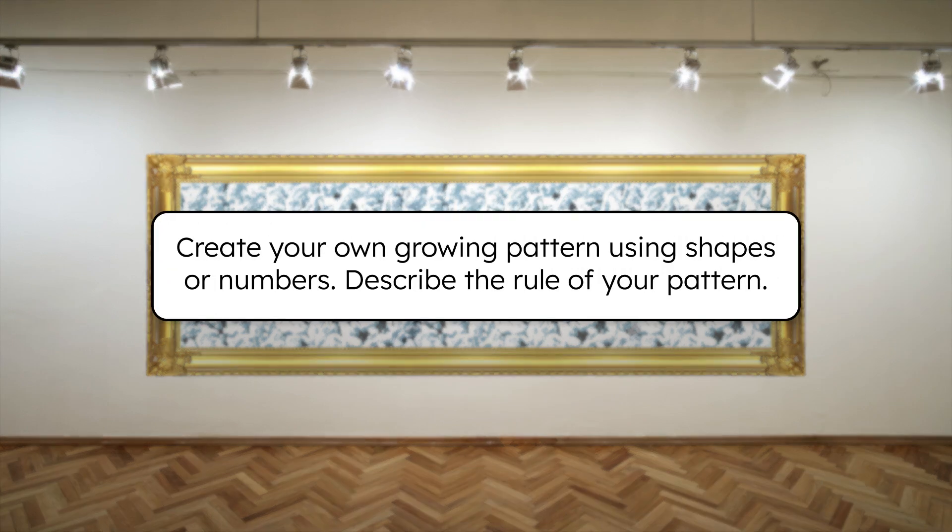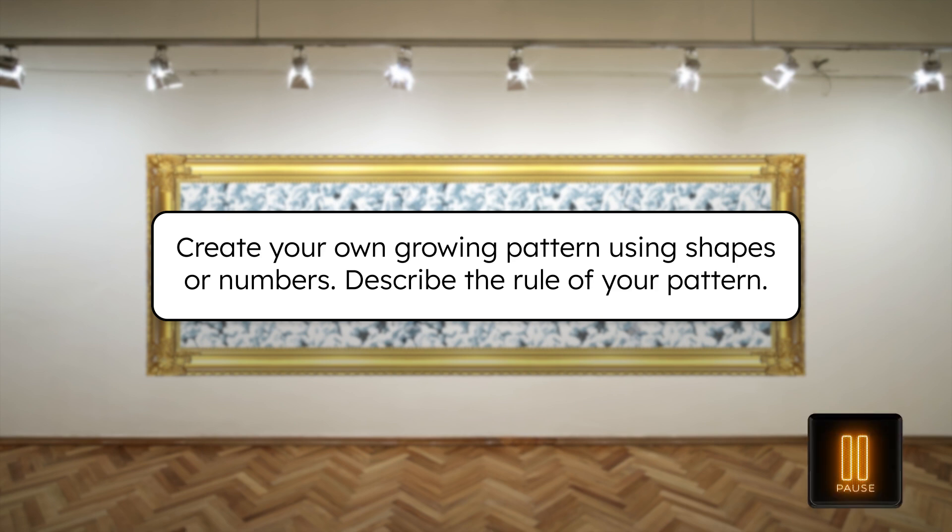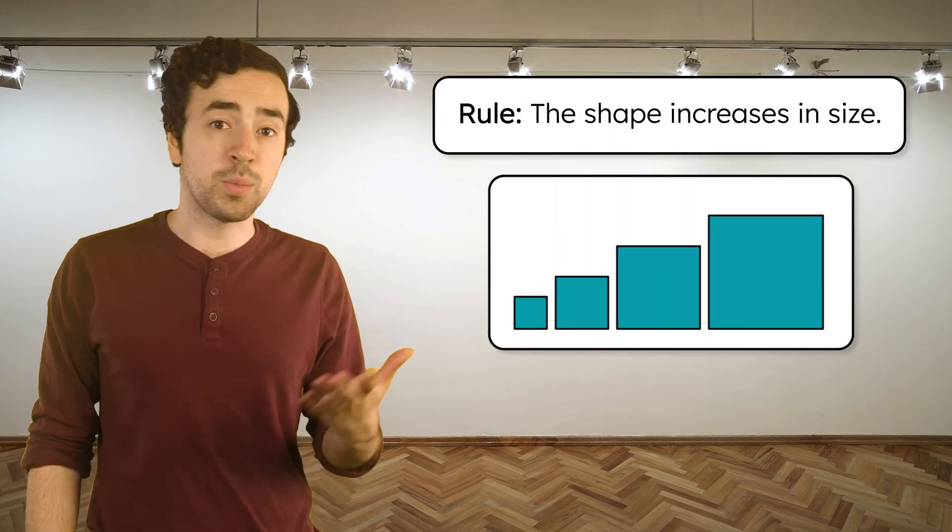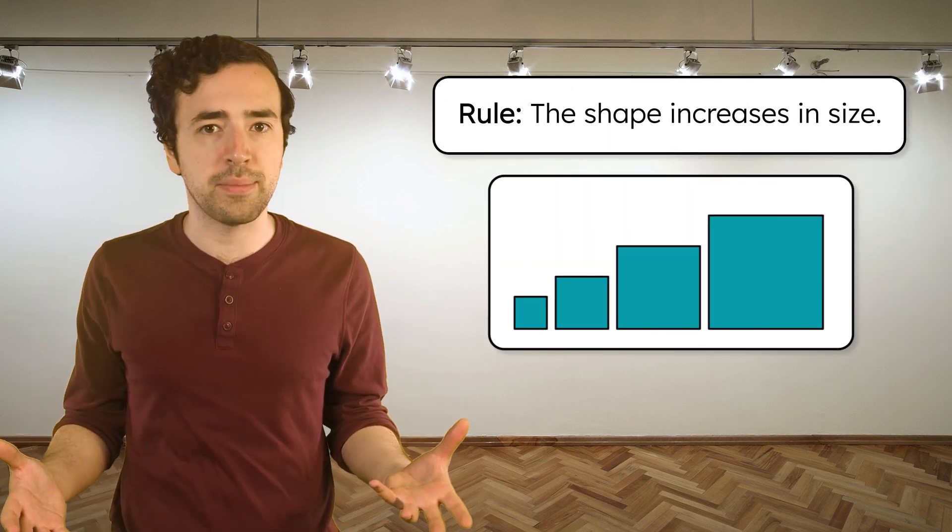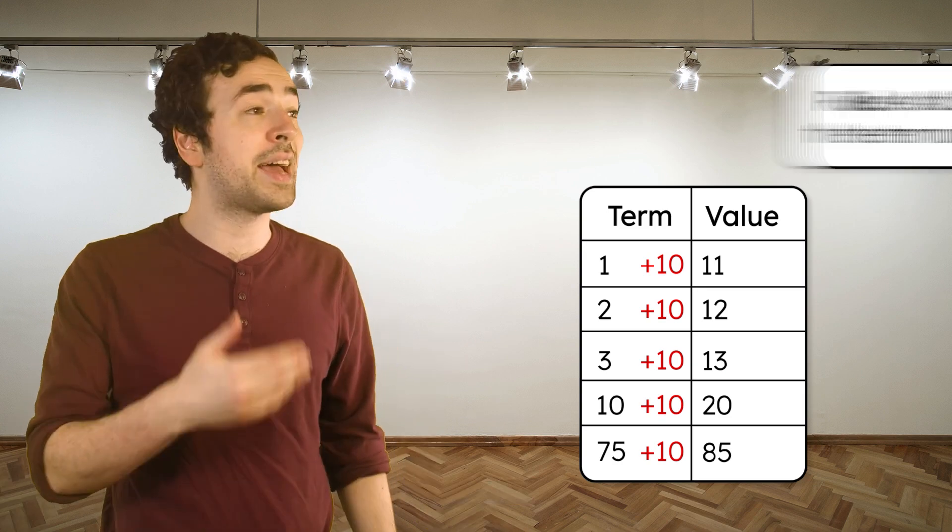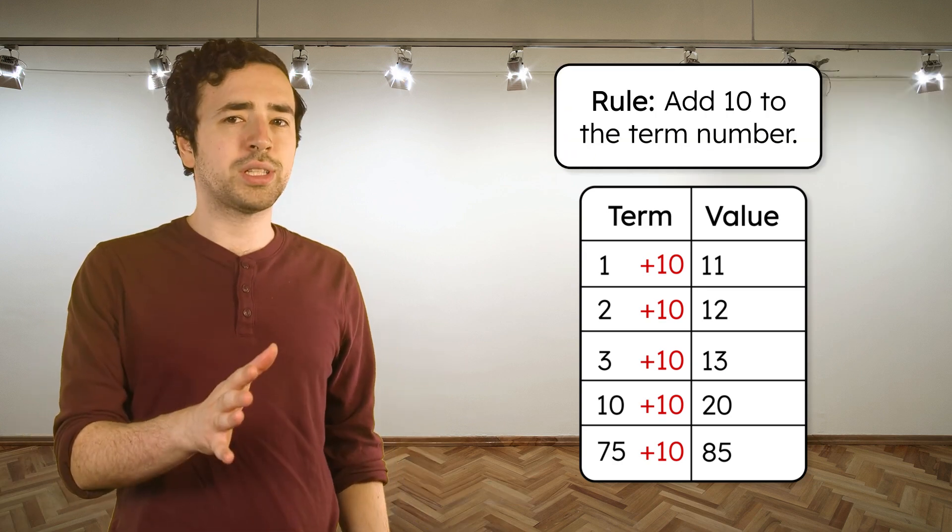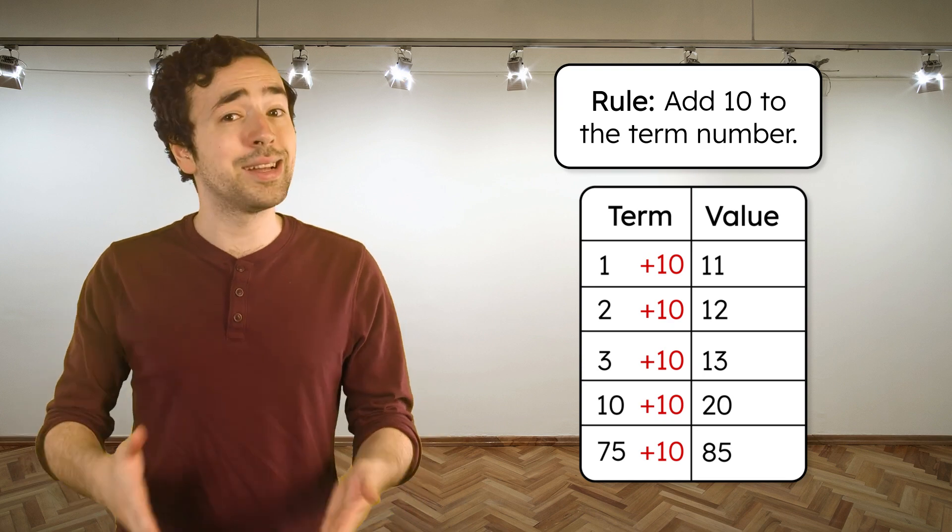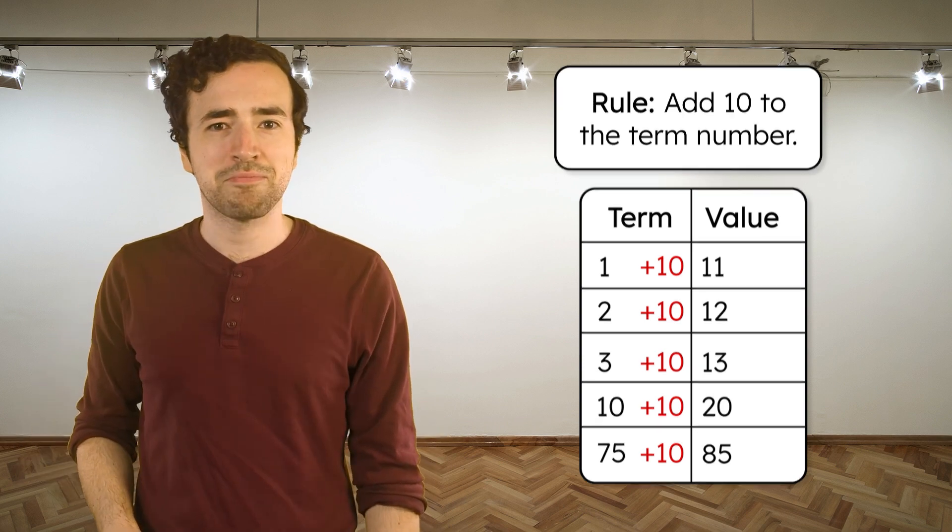Now it's your turn to become the artist. Create your own growing pattern using shapes or numbers. Just make sure your design grows in a predictable way, and that you can explain the rule it follows. After creating your pattern, describe the rule of your pattern. Pause the video here to record your thinking. Your growing pattern should show a clear change that follows a rule. You might have a pattern that shows a shape increasing in size each time, or you could have created a number pattern where you add 10 each time. As long as your design builds in a predictable pattern and you can explain your rule, you're right on track.